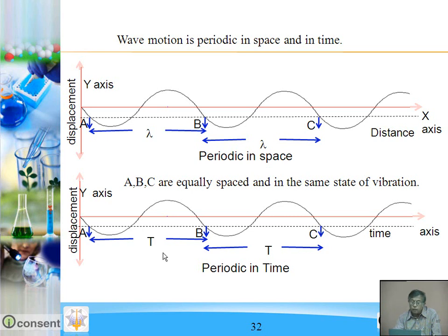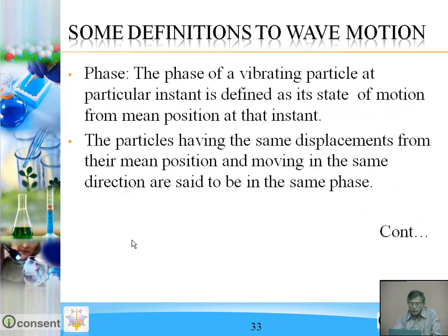Between B and C the period is also constant. Therefore, wave motion is periodic in space as well as in time.